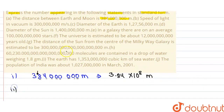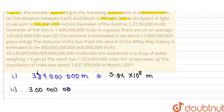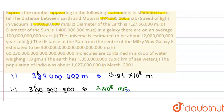Now the second statement is: the speed of light in vacuum is 300,000,000 meters per second. So the number is 300,000,000. The standard form is obtained by counting the digits: 1, 2, 3, 4, 5, 6, 7, 8. We have 8 places, so the answer is 3 × 10⁸ meters per second. We don't need to write the zeros after 3.